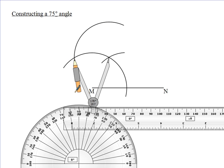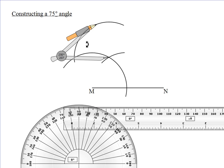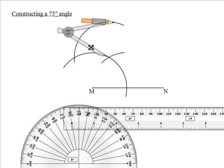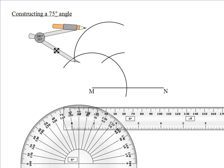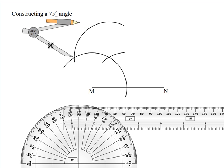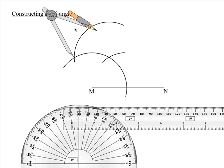There we have it. We have another intersection that we're going to use as a center. This time we will swing it from there to make a tiny arc to intersect the last one made.